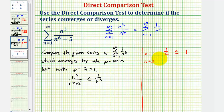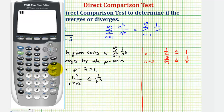When n equals two, for the given series we'd have two cubed, that's eight, divided by two to the sixth plus five, which is sixty-four plus five, or sixty-nine. So we'd have eight sixty-ninths. And for the comparison series we'd have one divided by two cubed, or one-eighth. Converting to decimals: eight divided by sixty-nine and one divided by eight. Notice how eight sixty-ninths is less than or equal to one-eighth.